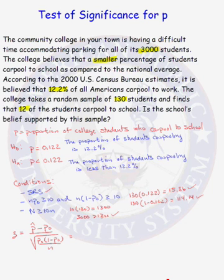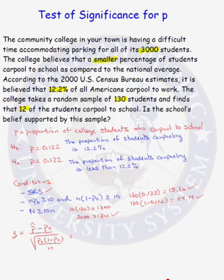In this lesson, we are going to do a test of significance for the population proportion P on the TI calculator. This problem was previously done all by hand in the video named Significance Test for a Population Proportion. All of the steps done there are identical to the steps done using the TI calculator. The TI calculator can help you find your Z test statistic and your P-value, but everything else included in the hand problem must still be included even if you use the TI calculator.